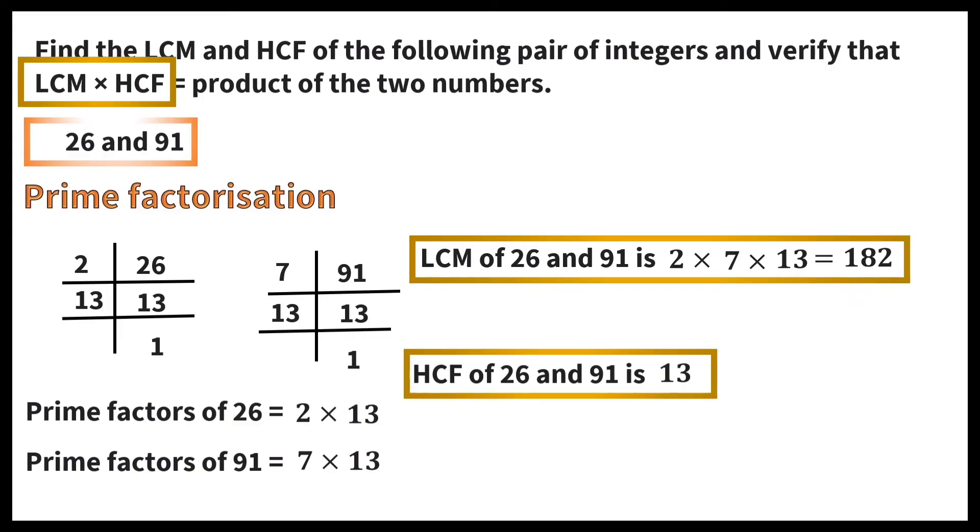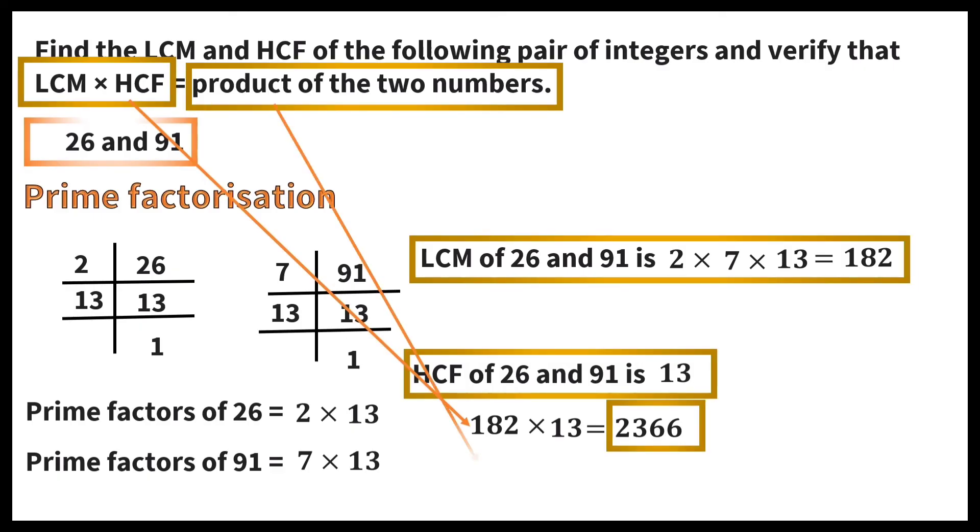Now let us multiply LCM into HCF. LCM is 182 and HCF is 13. So 182 into 13 that is equal to 2366. Now let us find the product of two numbers that is 26 into 91, which is equal to 2366. So it is verified.